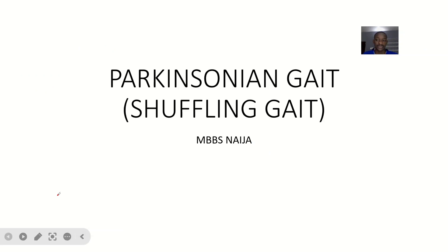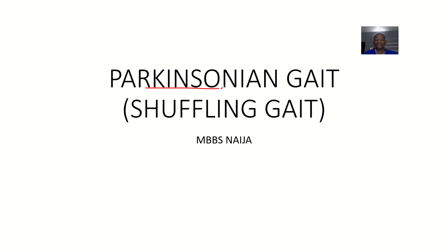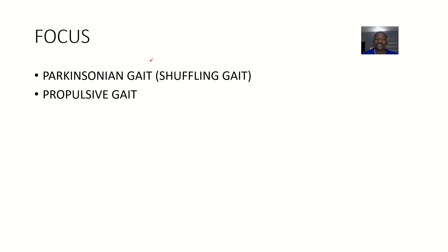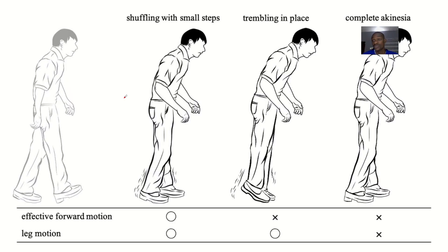The next gait to look at is known as the Parkinsonian gait. It's actually called Parkinsonian gait, not parkinsonism. It has so many names — also known as propulsive gait or shuffling gait. You need to know all these names because in an exam they may not say 'Parkinsonian' — they'll twist the question so your mind doesn't immediately go toward Parkinson's disease.